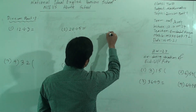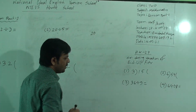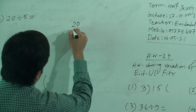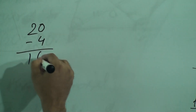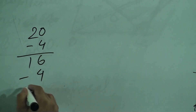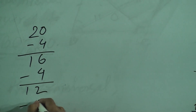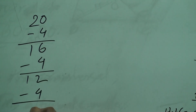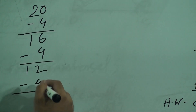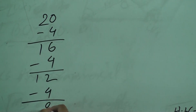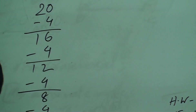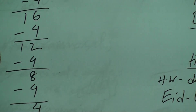20 is a number. If we subtract 4 from 20, we will get 16. Now again subtract 4 from 16, we will get 12. Subtract 4 again from 12, you will get 8. Subtract 4 from 8, you will get 4. Again subtract 4 from 4, you will get 0.